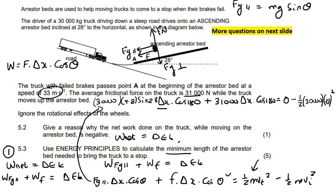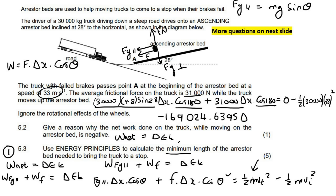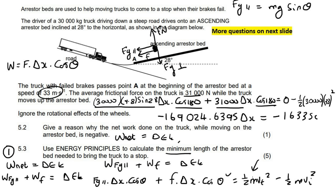Typing all of that into the calculator: the left-hand side gives negative 169,024.6395 times ΔX, and the right-hand side gives negative 16,335,000. The two negatives cancel, and dividing gives a final answer of ΔX = 96.64 meters.